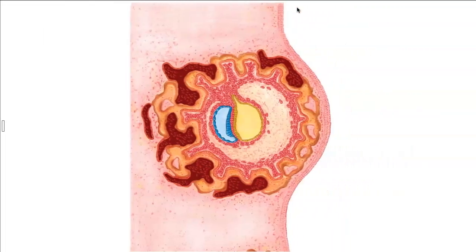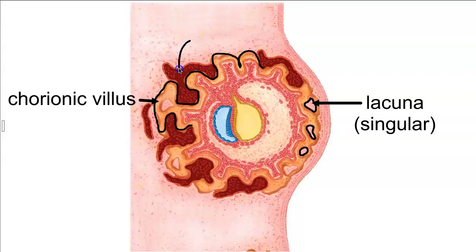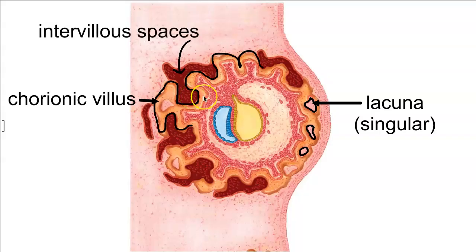The chorion continues to implant and invade the endometrium, creating little cavities known as lacunae. Those lacunae are filled with maternal blood from the damaged endometrium. The chorion grows outward in extensions like roots of a plant, anchoring the conceptus in the endometrium — these extensions are known as chorionic villi. The spaces around the chorionic villi filled with maternal blood are known as the intervillus spaces. The mesoderm lining this area will eventually give rise to blood vessels responsible for blood flow to and from the conceptus.